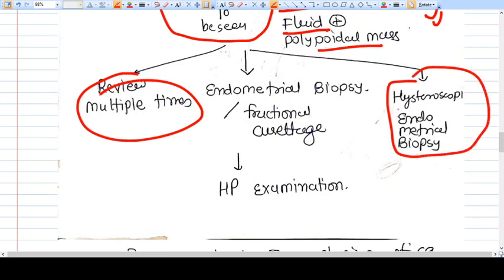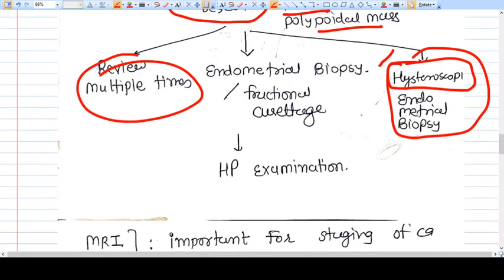Hysteroscopic visualization and biopsy is useful only for the carcinoma which is localized to some place. Otherwise, hysteroscopy should not be done in adenocarcinoma because there is a theoretical risk of spread of carcinoma cells into the pelvic cavity, so it should not be preferred.